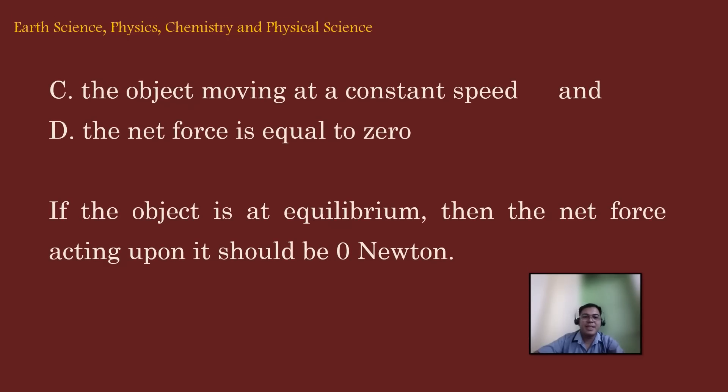The correct answer is C and D. The object moving at a constant speed and the net force is equal to zero. Now, if the object is at equilibrium, then the net force acting upon it should be zero Newton. The law of inertia could be at rest or in motion but no net force or the so-called imbalance force.